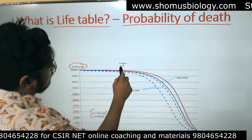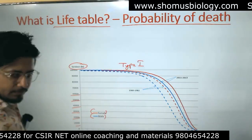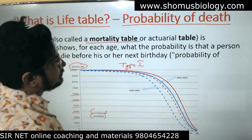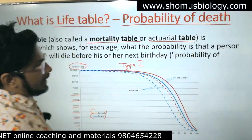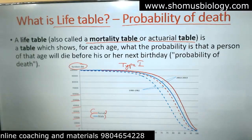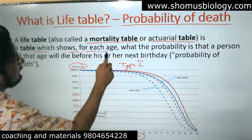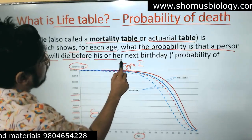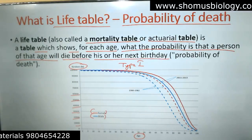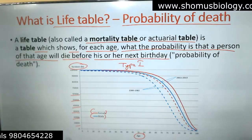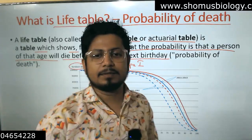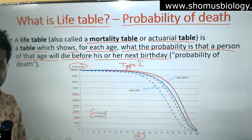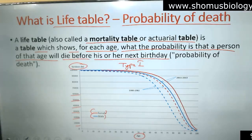This is an example of a Type 1 survivorship curve, that's why we have this sort of curve. A life table is also known as a mortality table, or an actuarial table. It's a table which shows for each age what is the probability that a person of that age will die before his or her next birthday — so basically, the probability of death. For example, if your age is 30 now, what is the chance that you'll survive to 31 or 32? That probability is calculated from the life table.